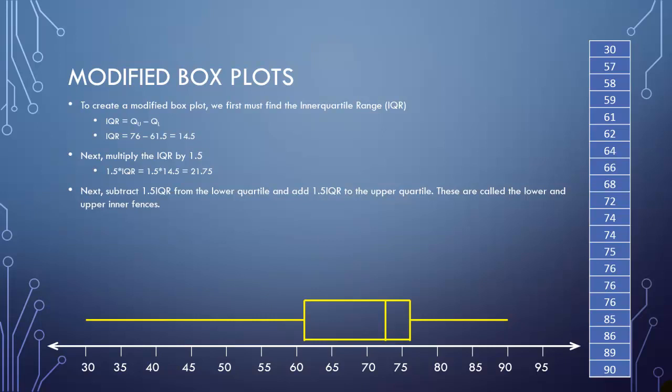So subtract those two numbers, and we get 76 minus 61.5 gives us 14.5. Next, we multiply the IQR by 1.5. When we do that, we get 21.75. I know this seems a little complicated, but just follow me so far. We're going to take 21.75 and subtract that from the lower boundary, the 61.5, and add it to the 76, so added and subtracted from the fences.